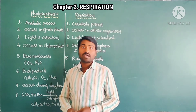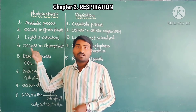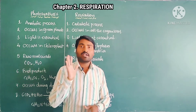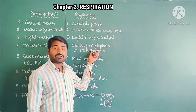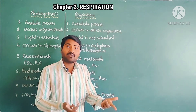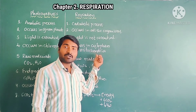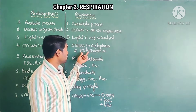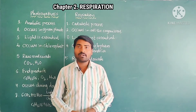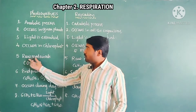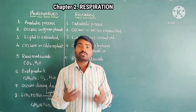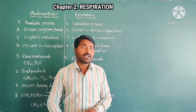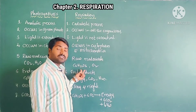Fourth point: photosynthesis occurs in the chloroplast, where chlorophyll is present. Respiration occurs in the cytoplasm — glycolysis is where glucose breaks down into pyruvate and it occurs in the cytoplasm. Then pyruvate goes into the mitochondria where cellular respiration takes place. So respiration occurs in the cytoplasm and mitochondria of the cell. Raw materials for photosynthesis are carbon dioxide and water; raw materials for respiration are glucose and oxygen.